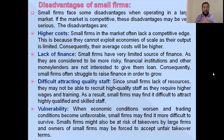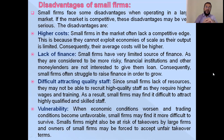The first disadvantage is higher cost. Small firms often lack a competitive edge because they cannot exploit economies of scale as their output is limited. Consequently, their average cost will be higher. Since small firms produce on a smaller scale and purchase raw materials in small amounts, they do not get discounts. Their cost of production is higher, and in a competitive market they cannot control prices, so their profit margin is also lower.